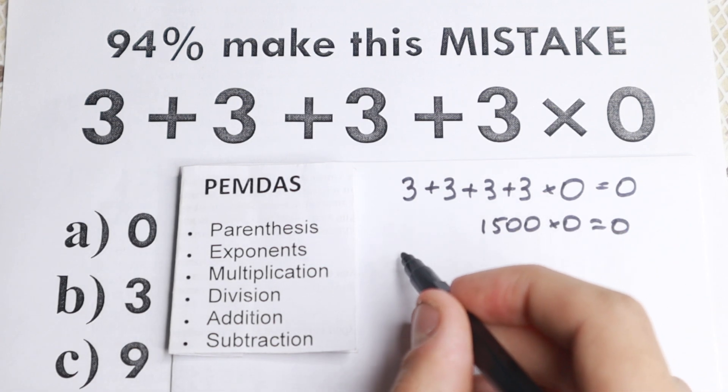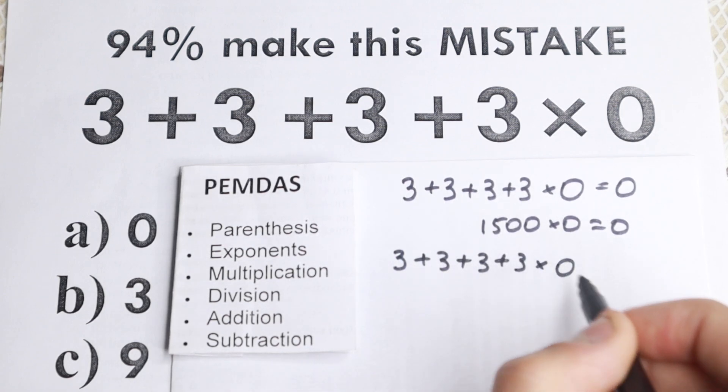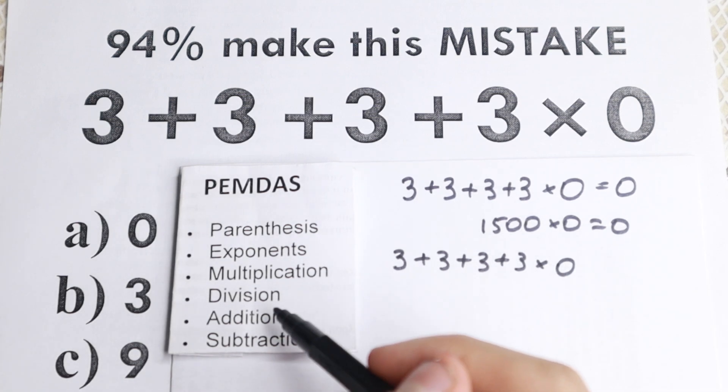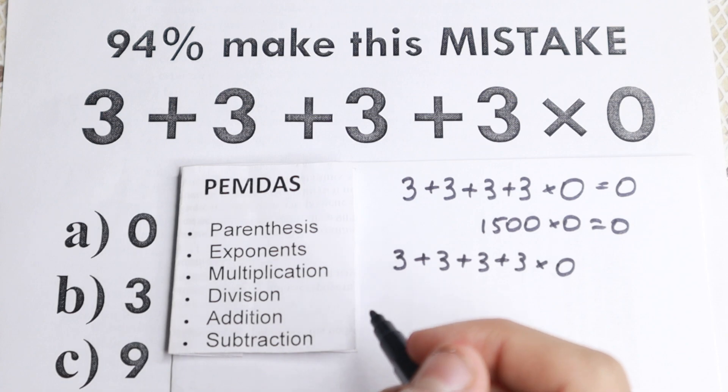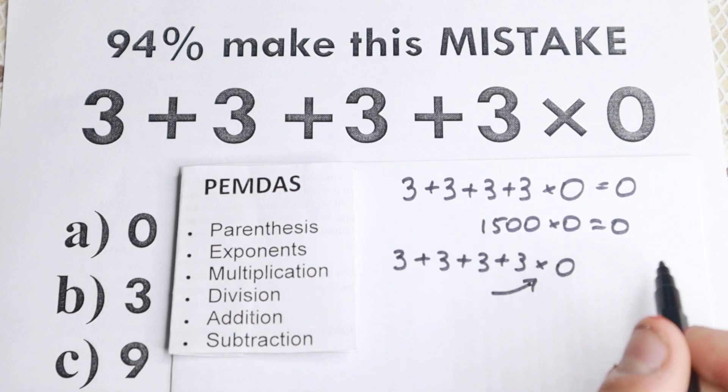I just want to rewrite this problem once more. So 3 plus 3 plus 3 plus 3 and times 0. So multiplication division part. We don't have division, so we just skip this part. We have only multiplication. But let's look about multiplication. So addition, addition, addition. Right here we have multiplication.